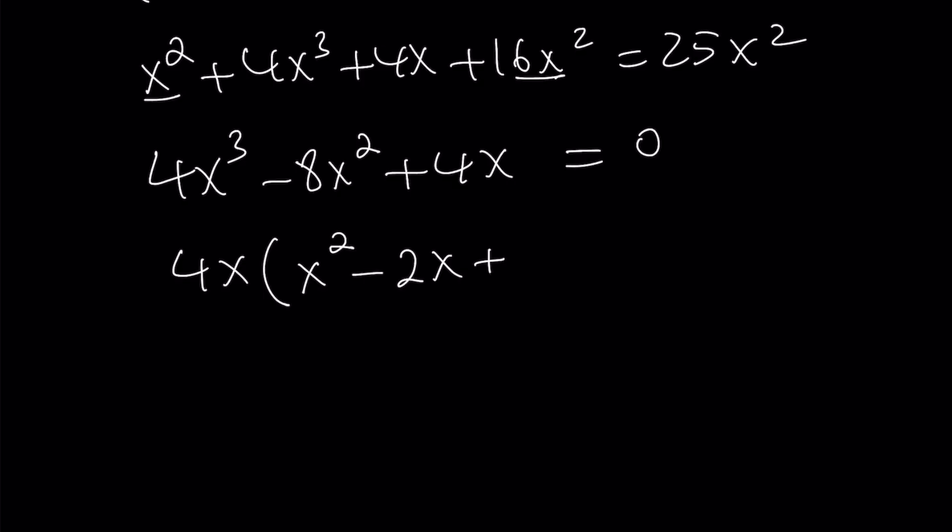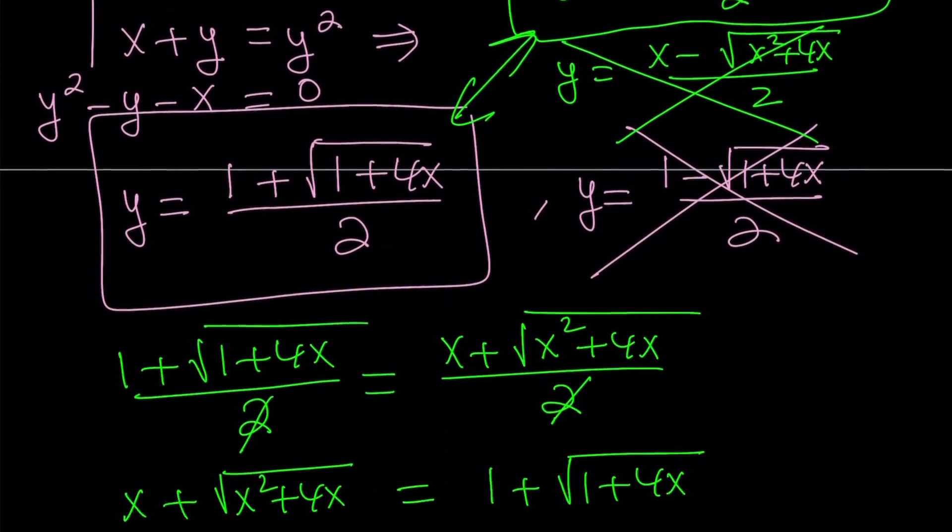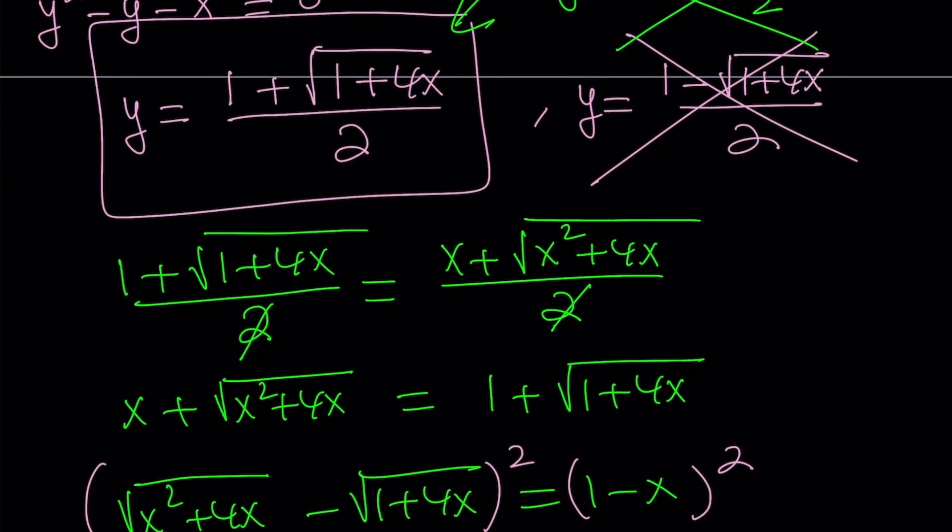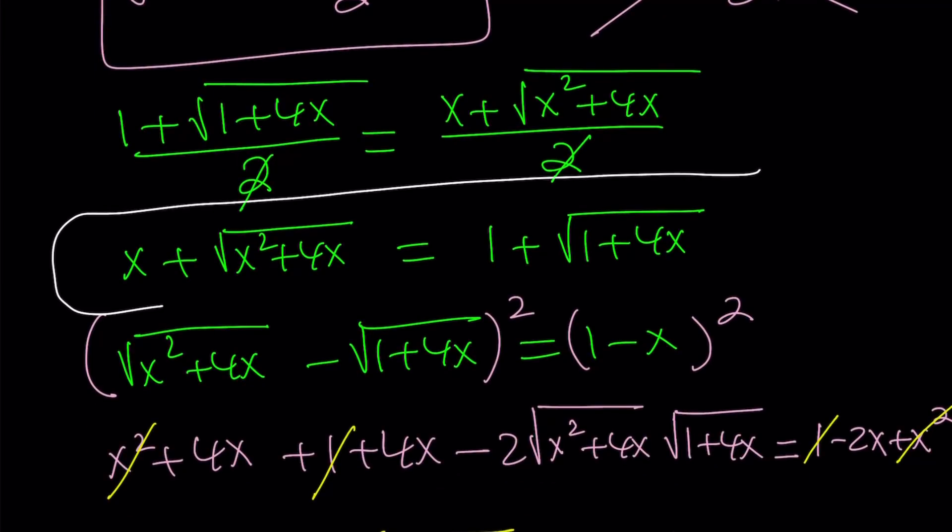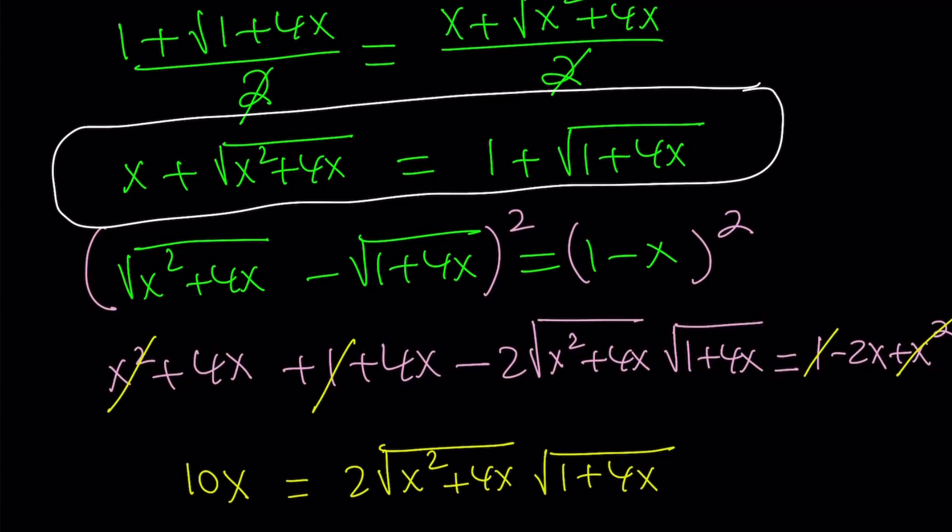So, it's going to be 4x times x squared minus 2x plus 1 equals 0. And this is awesome. Because you get x equals 0 and x minus 1 squared equals 0, which means x equals 1. So, we got two candidates. I say candidates because these solutions may not work. So, we have to check with the original equation. How do we check? What do I mean by original? Not the infinite radical. But the equations that we came up with. This one. This is our, well, pretty much the original.